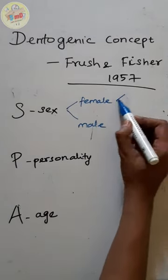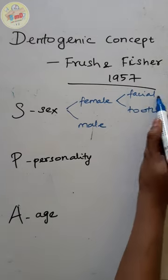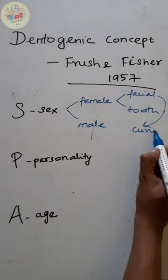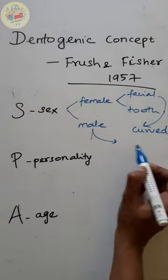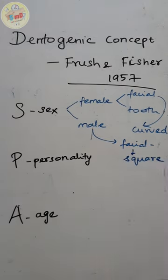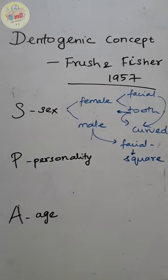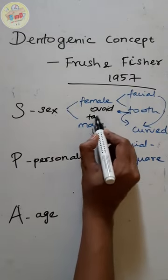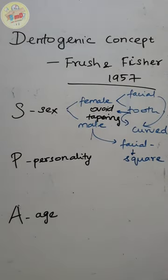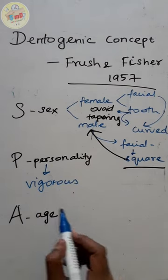In gender, we have male and female. The facial and tooth forms are interrelated. Female facial forms are more curved whereas male facial forms are square. Therefore, the tooth morphology is also based on that — curved facial features will have ovoid and tapering teeth, whereas males will have more square teeth.